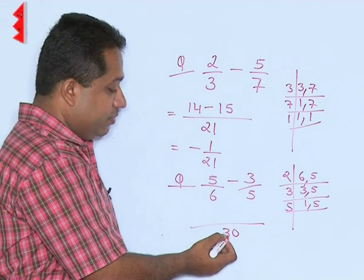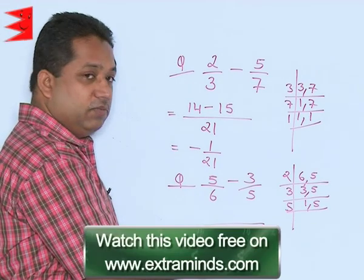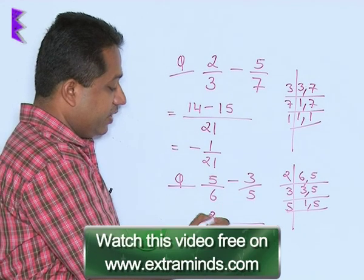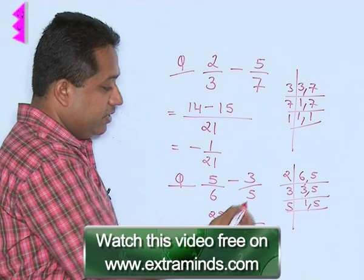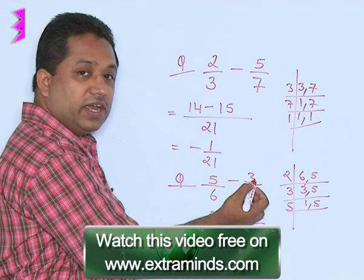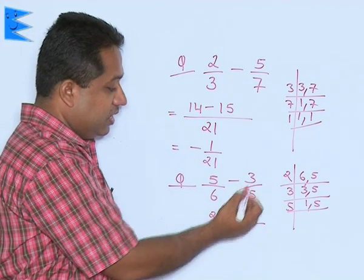We will see how many times 6 goes in 30. 6 goes 5 times, 5 into 5 is 25. So, numerator on the left side 25 minus 5 goes 6 times 30. So, 6 has to be multiplied with 3 here.